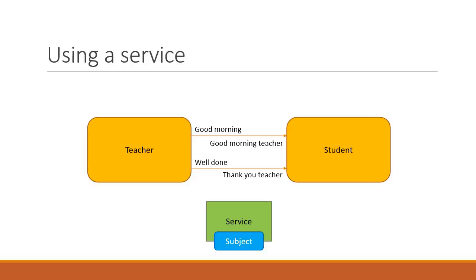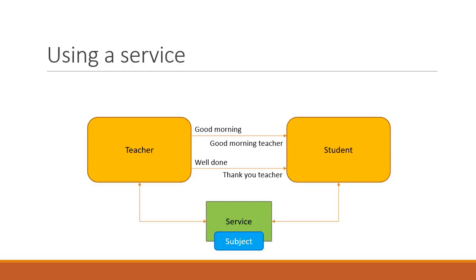To put things simply, a Subject involves taking notifications from a single source and forwarding them to one or more destinations, and it is usually placed in a service. So if the teacher sends a message to the Subject, the Subject pushes a notification to all subscribed components. In code, step 1: create a Subject and expose it as an observable. Step 2: send the message from the teacher component to the Subject. Step 3: subscribe to the Subject from the student component to fulfill the component interaction.